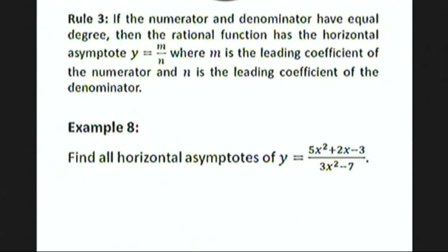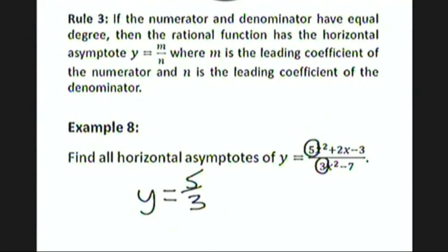For Rule 3: find all horizontal asymptotes of y equals 5x squared plus 2x minus 3 over 3x squared minus 7. Both the numerator and denominator have degree 2 — equal degree — so we take the coefficients of the highest power of x, and the answer is y equals 5 over 3.